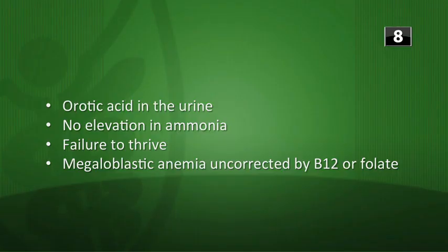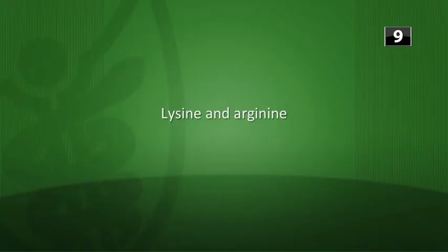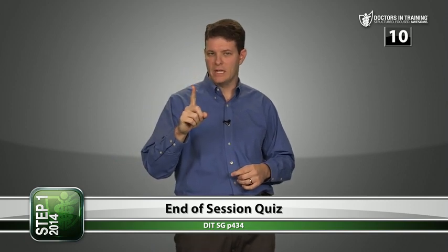Key features of orotic aciduria: orotic acid in the urine, no elevation in ammonia, failure to thrive, and megaloblastic anemia not correctable with B12 or folic acid. The positive charge of histones comes from lysine and arginine; the negative charge of DNA comes from the phosphate groups.